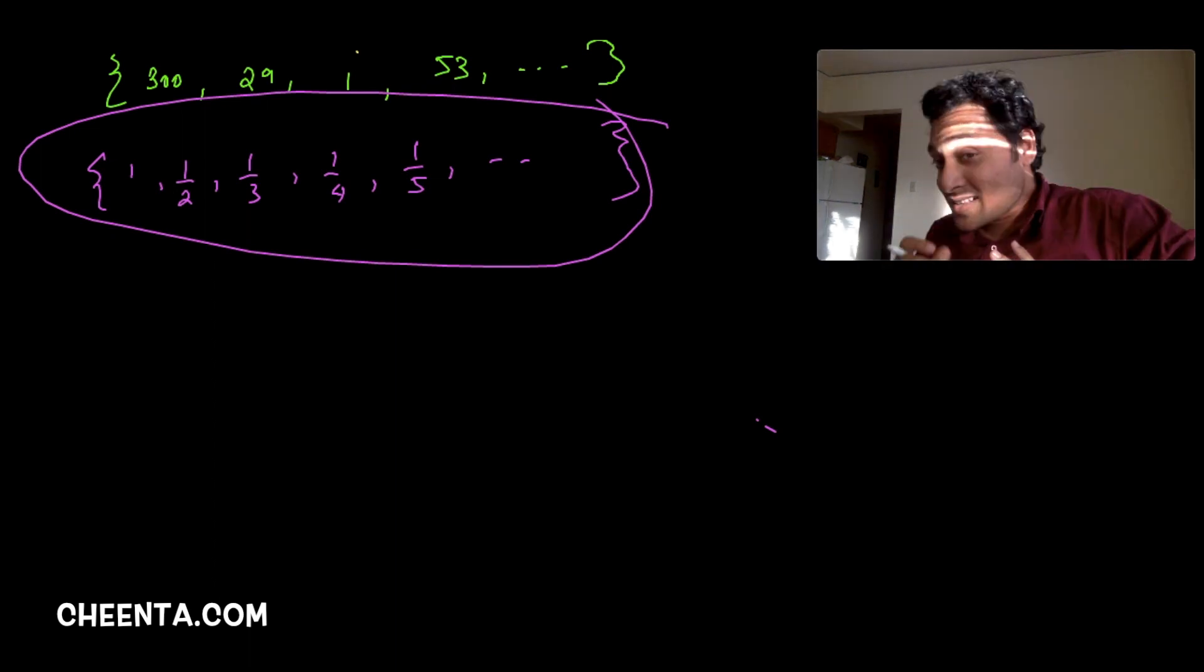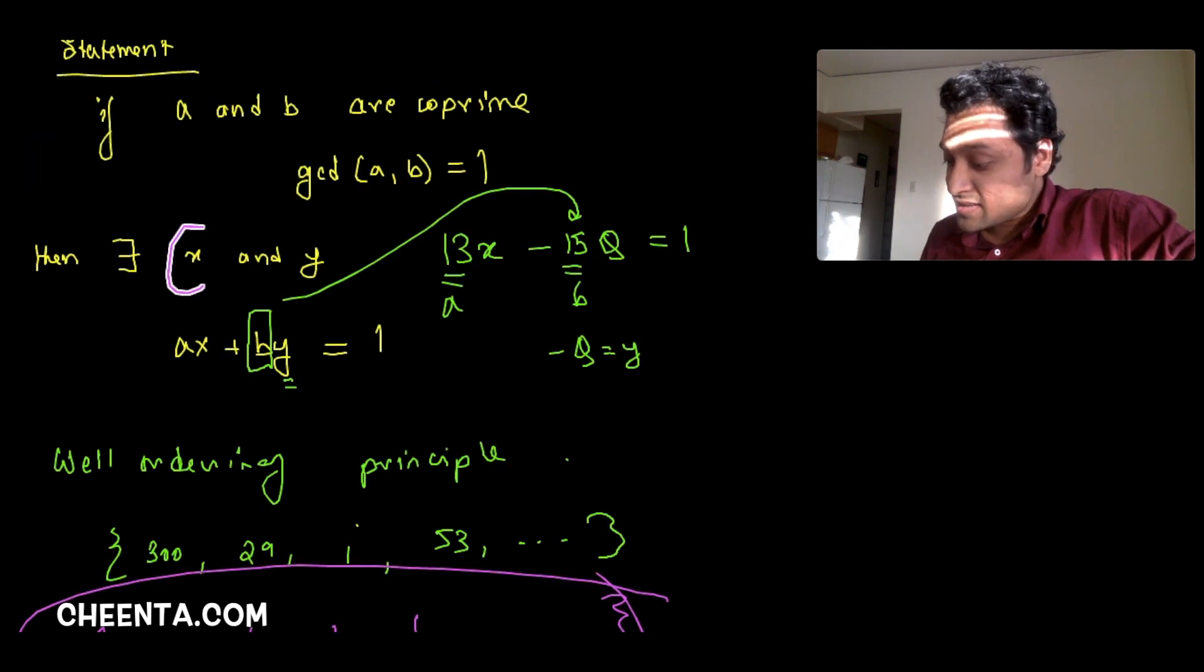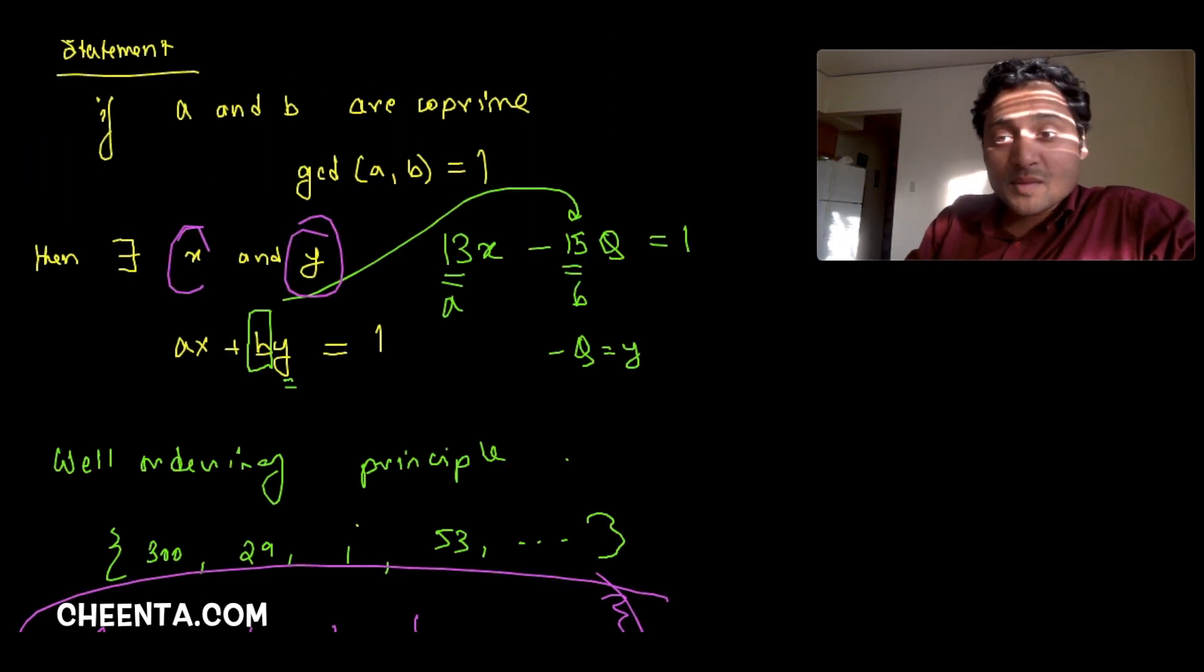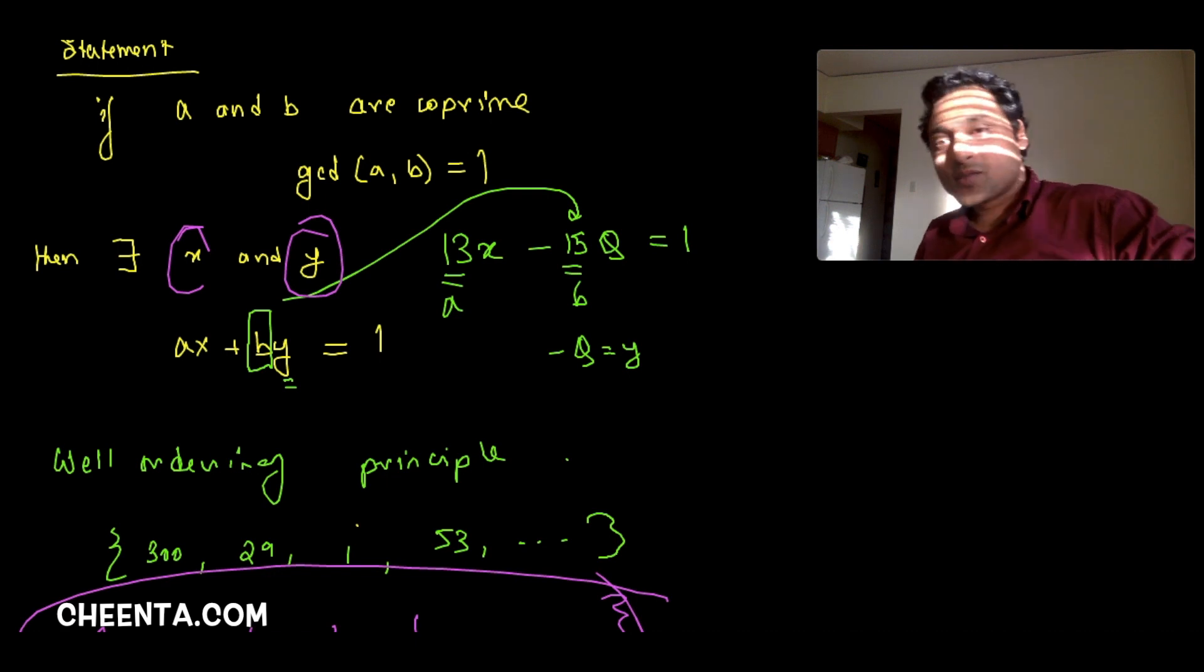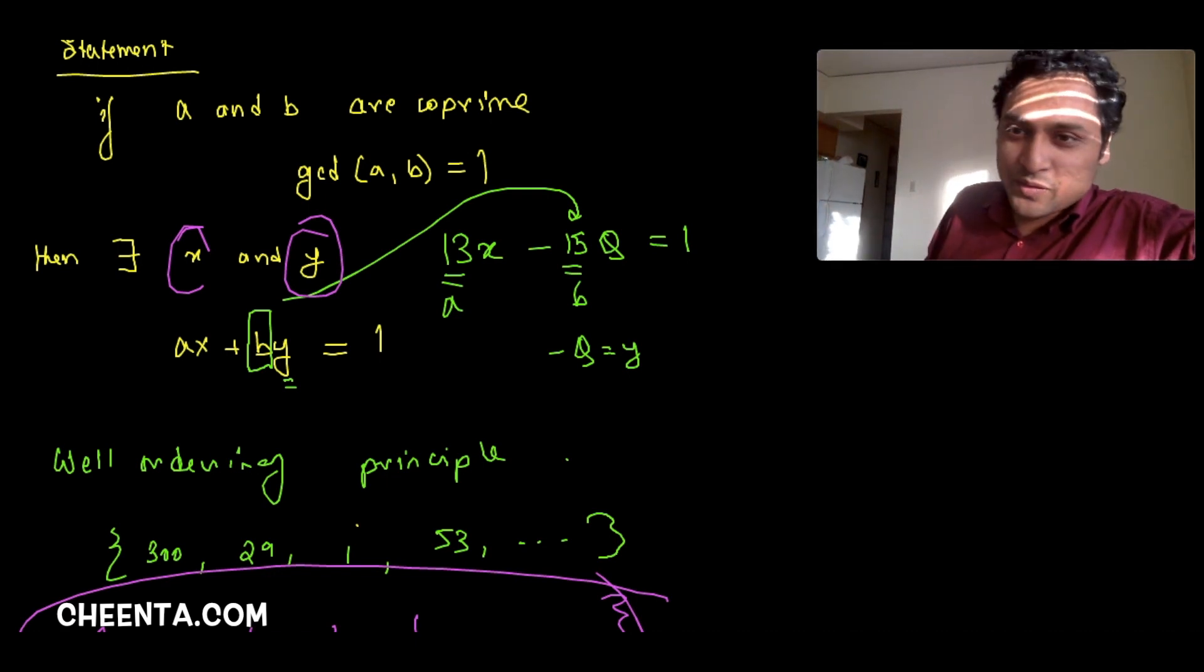What well ordering principle says is this doesn't happen for integers, positive integers. And that's what we will use. We will put to use to prove that there exists such x and y such that ax plus by is equal to 1. So why don't you think about it, give it a little try, and in the next video we will definitely talk about this. All the best.